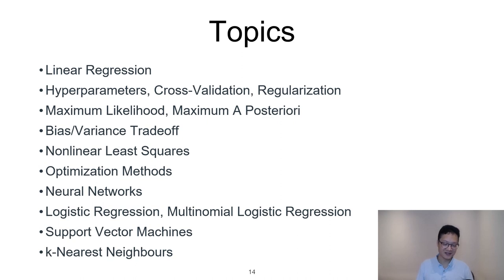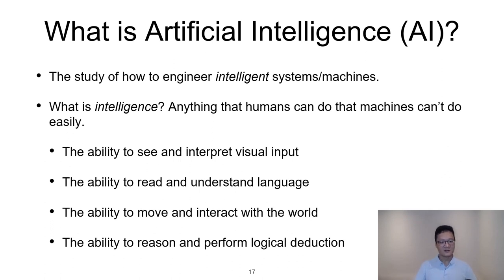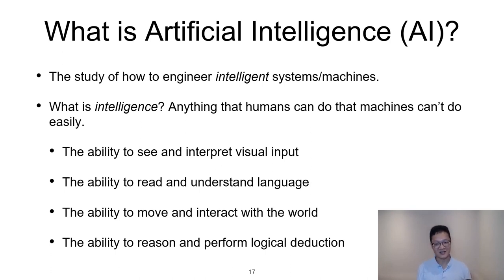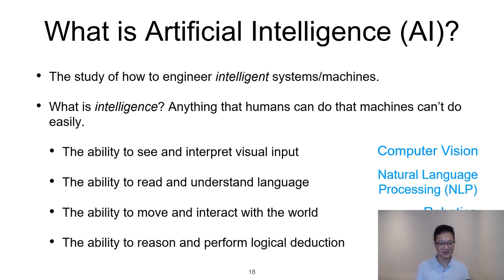Now let me motivate why we need machine learning. Machine learning falls under the umbrella of artificial intelligence — the study of how to engineer intelligent systems. Intelligence might be defined as anything that humans can do that machines can't do easily: the ability to see and interpret visual input, read and understand language, move and interact with the world, and reason and perform logical deduction. These correspond to subfields: computer vision, natural language processing, robotics, and traditional AI.